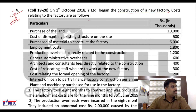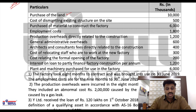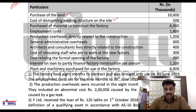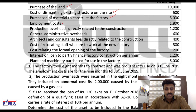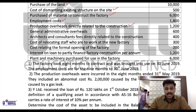On 1st October 2018, BY Limited began the construction of a new factory — this is a self-constructed factory. Costs relating to the factory are: purchase of land — included; cost of dismantling the existing structure on the site — included; purchase of material to construct the factory — included; employment costs — included.